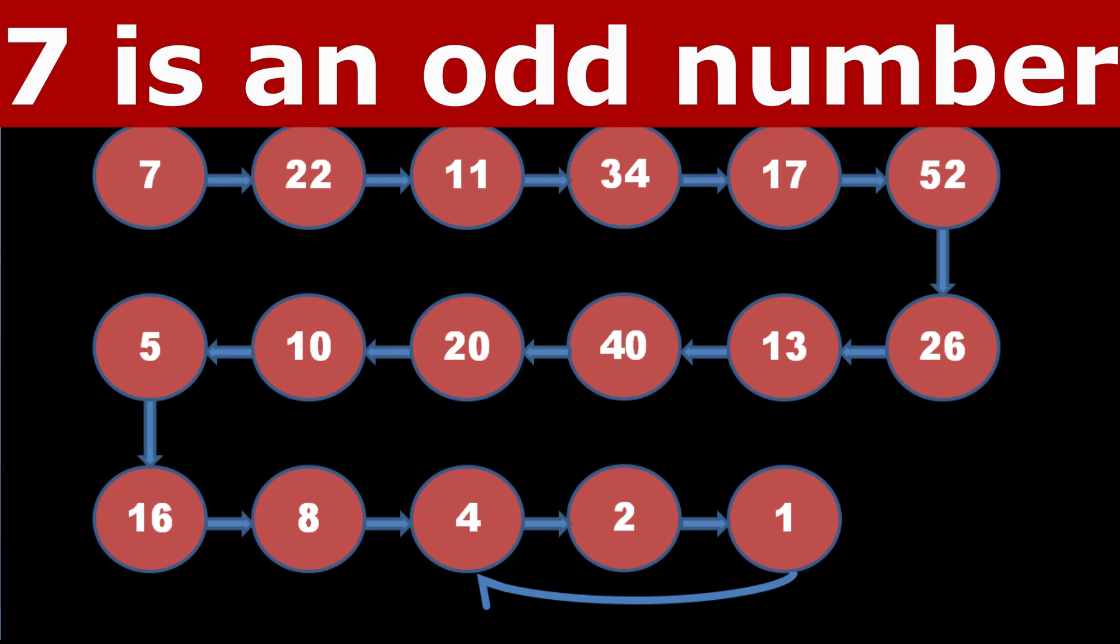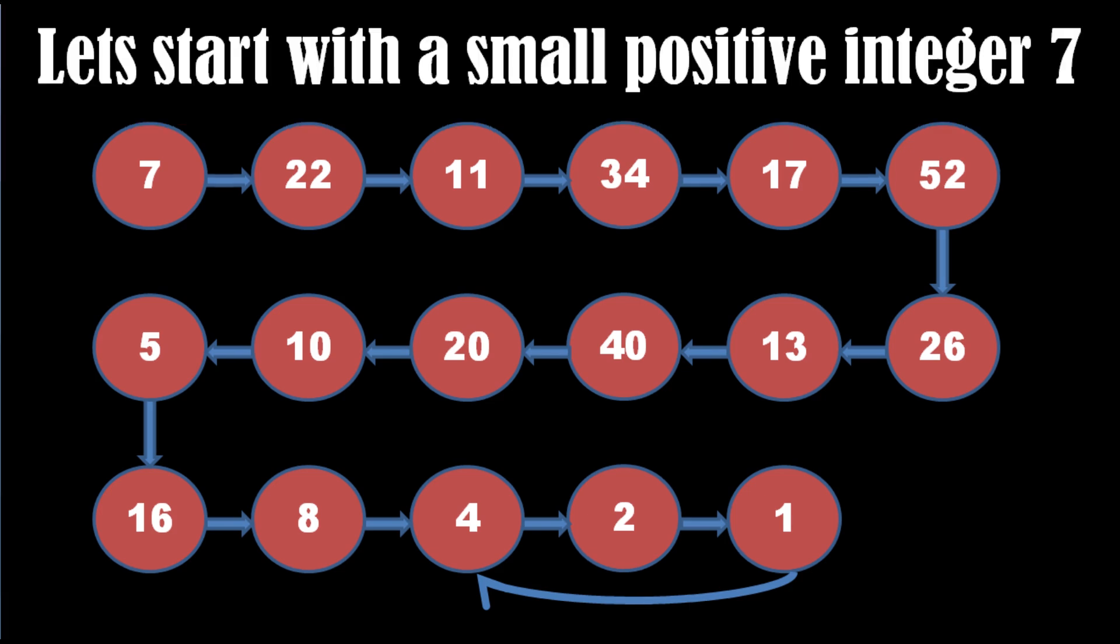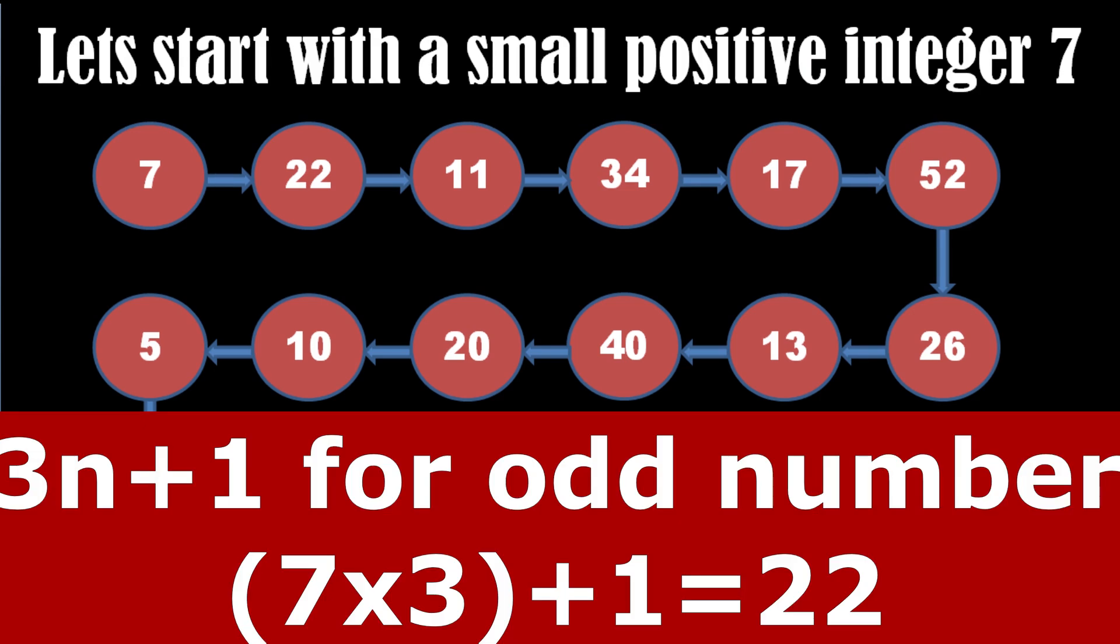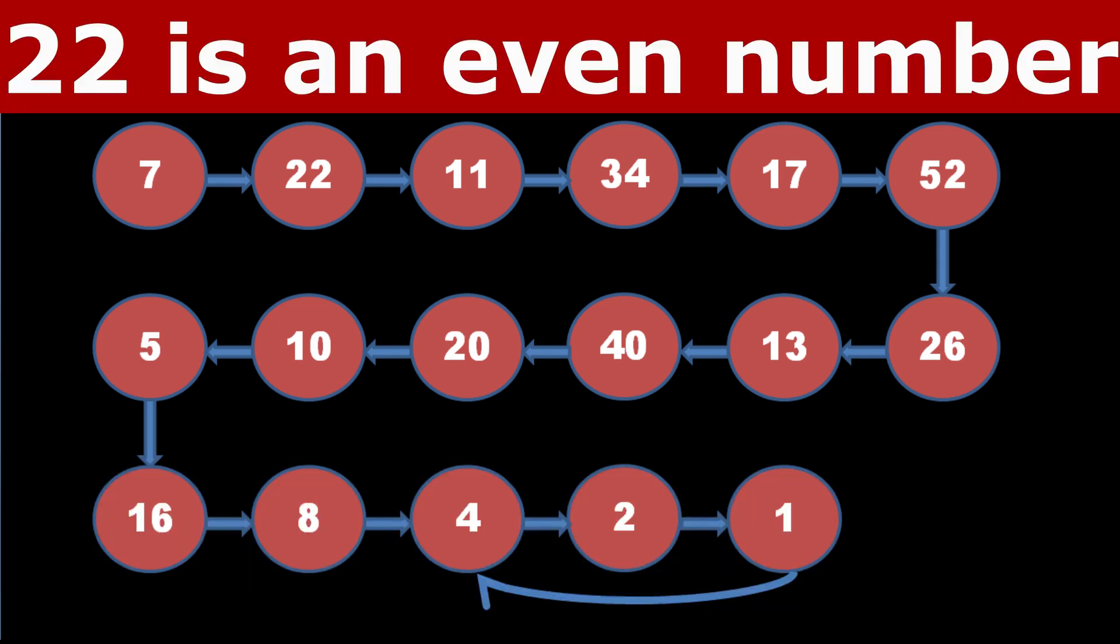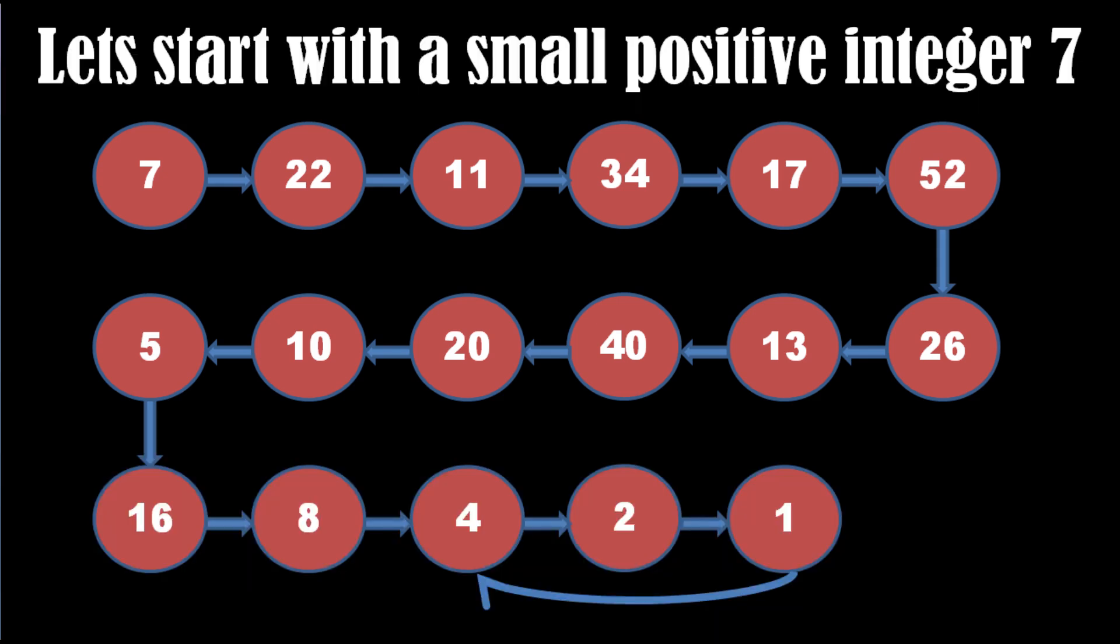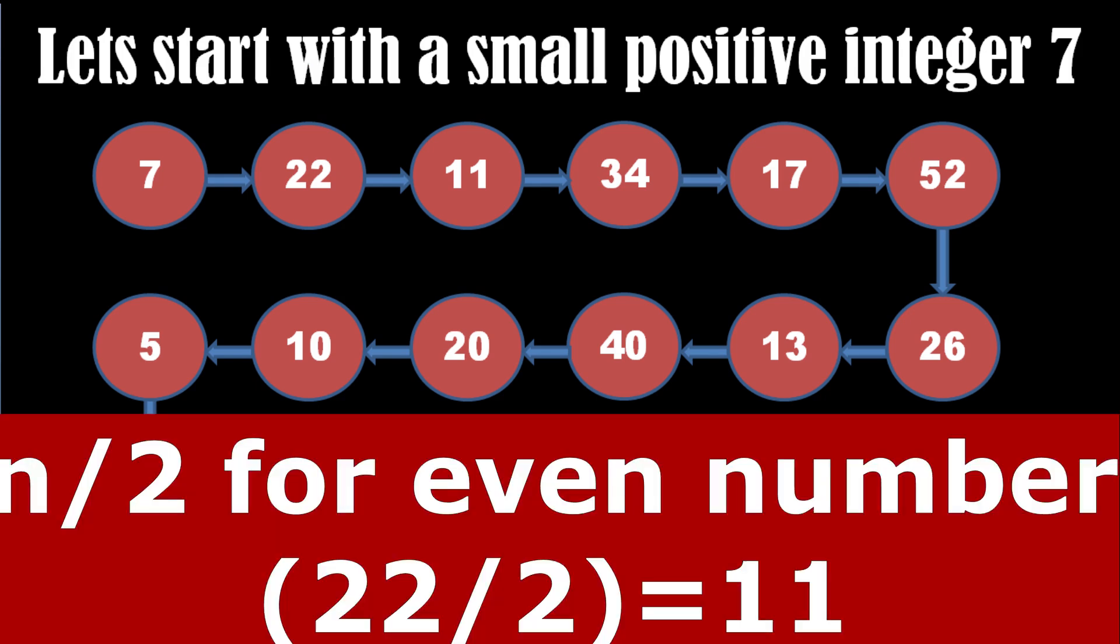7 is an odd number, so to get the next number, as per the rule, we multiply it by 3 and add 1. Hence we get 22. Now see, 22 is an even number, therefore next number will be obtained by dividing it by 2. We get number 11.